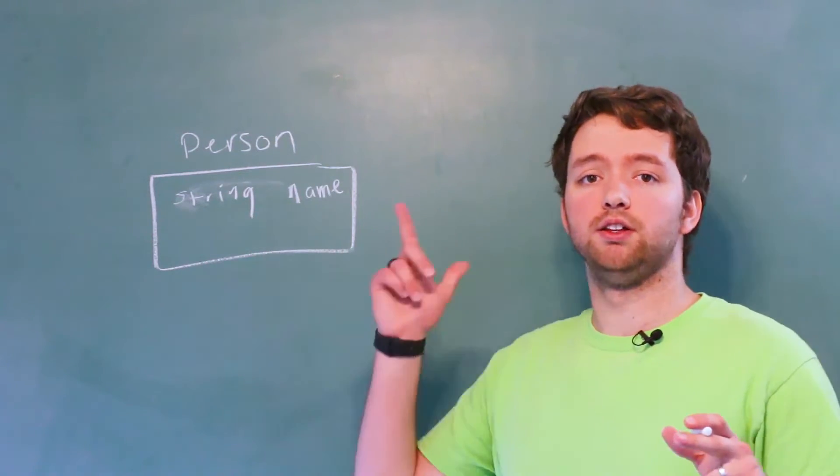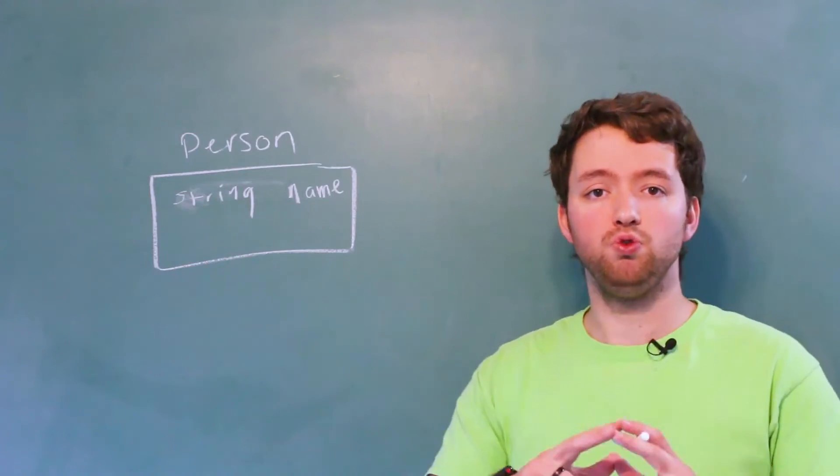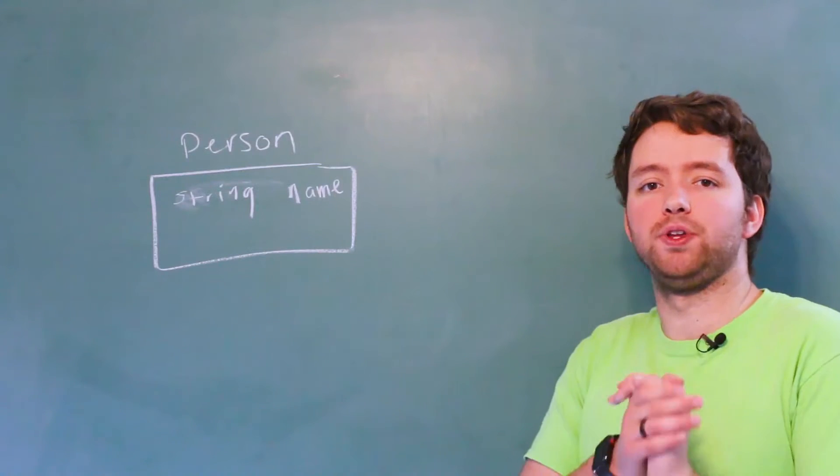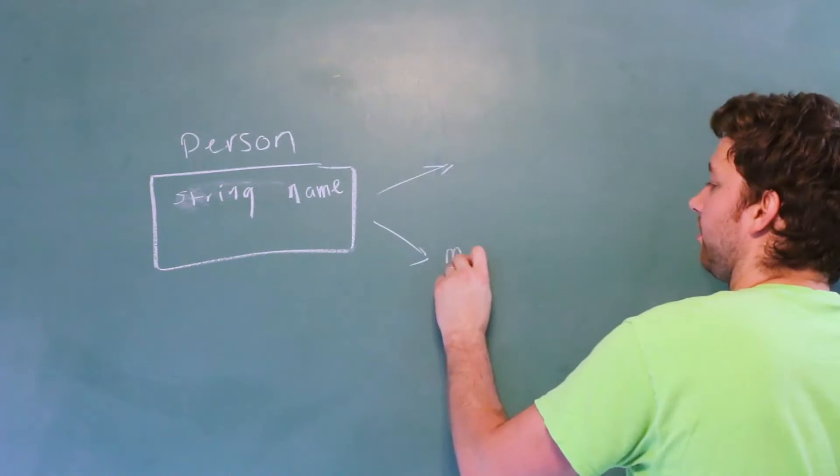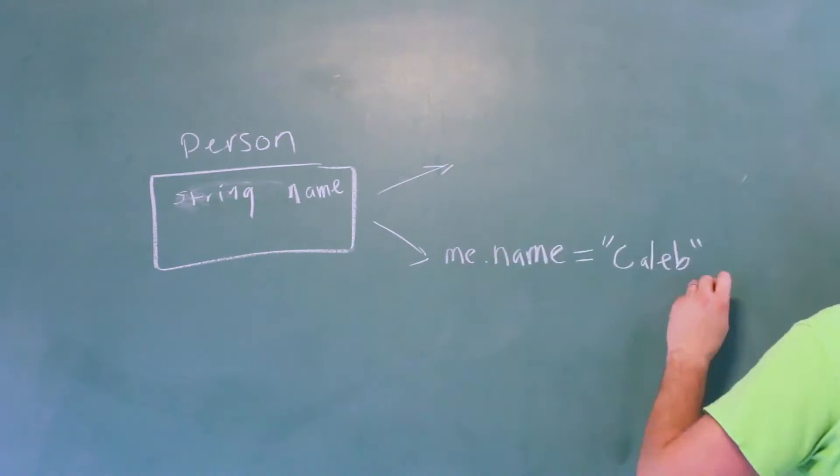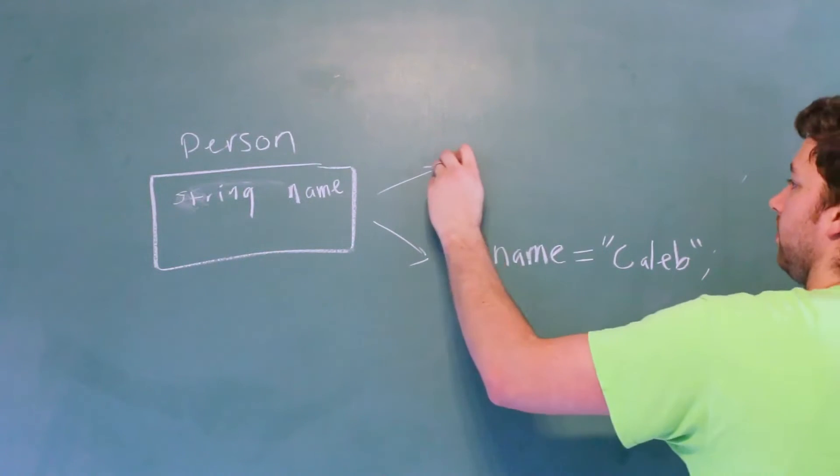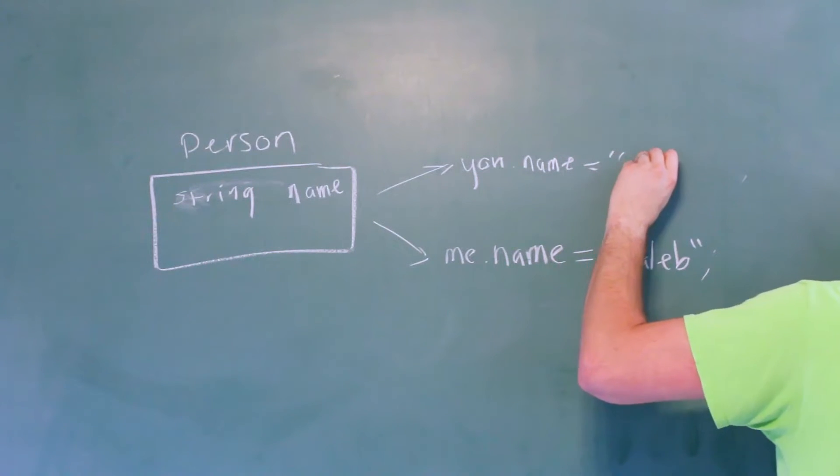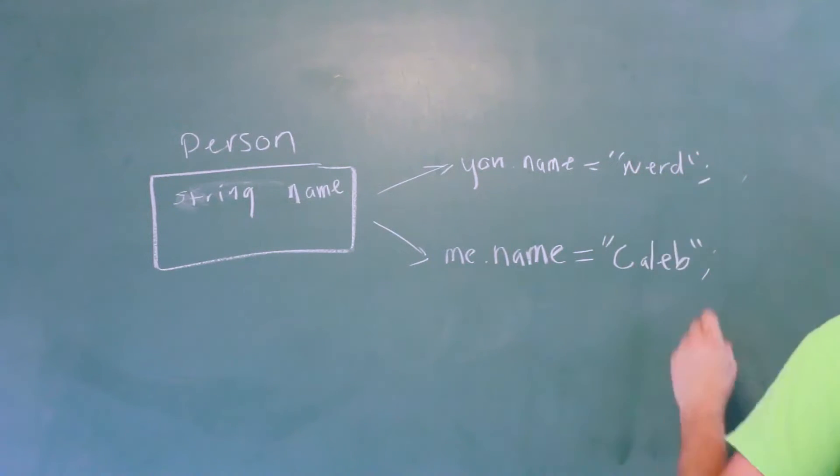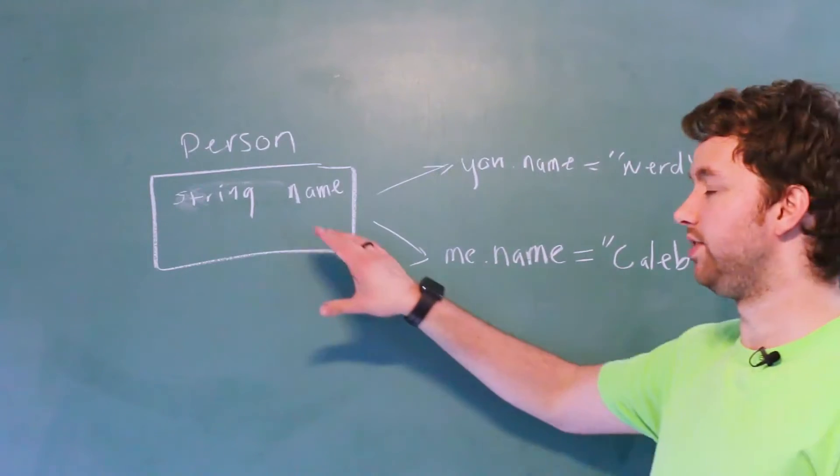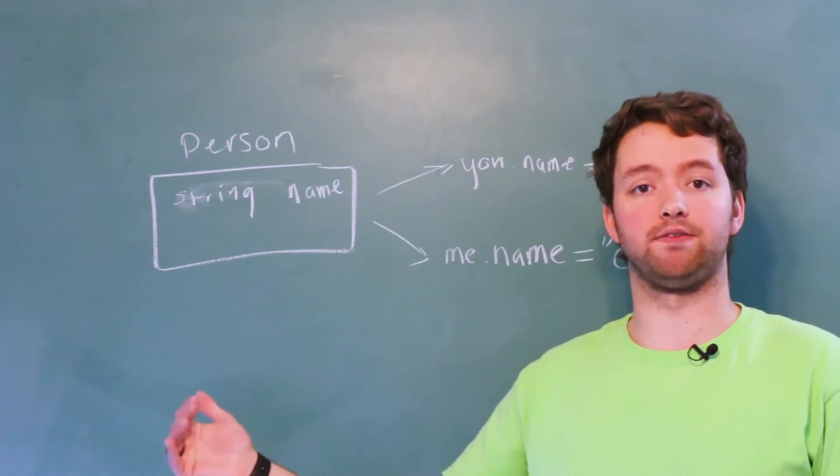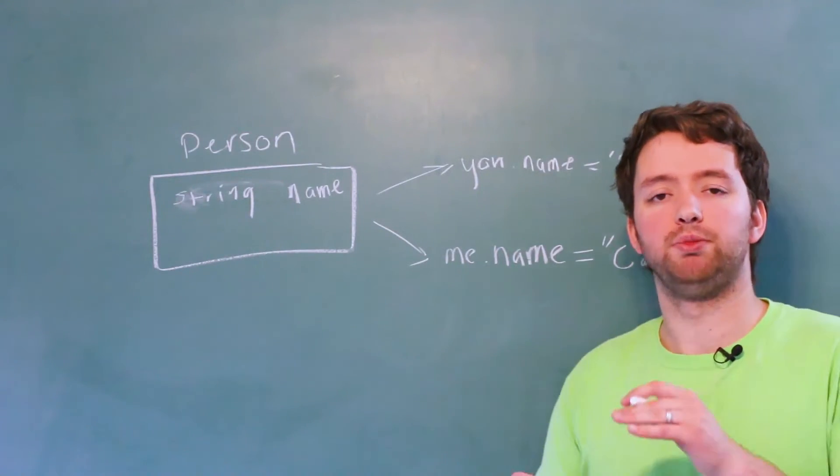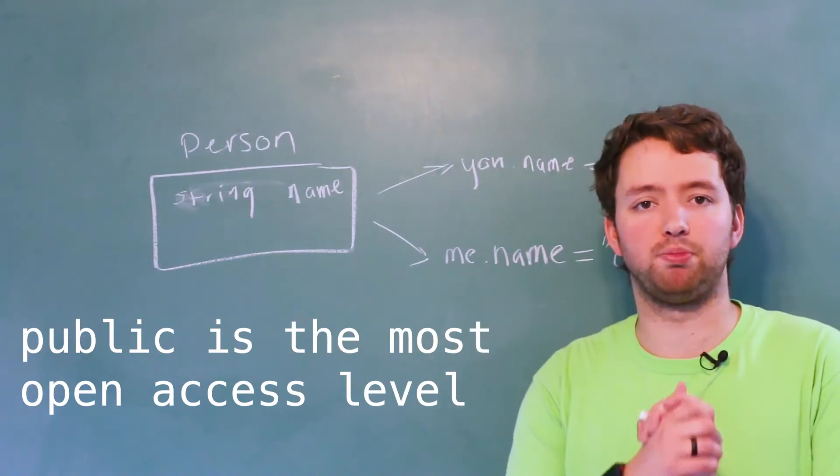When we instantiate it, let's say we do it twice, we create two objects, each one can have their own name. So we could have an object down here where me.name is equal to Caleb. We can have another object where you.name is equal to nerd and so forth. So again, this is just the blueprint. We're saying, hey, each person should have a name. So hopefully by now you understand fields, a little bit how they work, but there's a keyword that you might need to know about. And that is public.